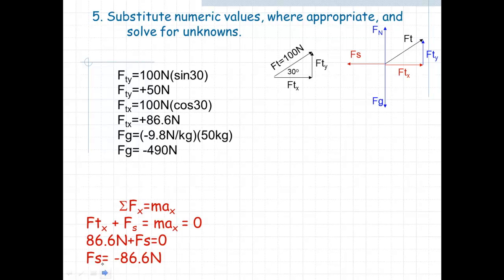Well, now that we know what FTX is, we can take FTX from here and plug it into our equation, and we get our 86.6 Newton. If we solve this equation, that gives us the static frictional force of negative 86.6 Newton. The negative meaning that it is pointing to the left.